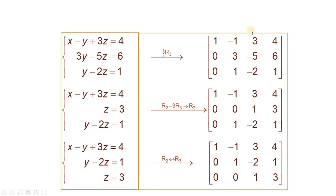For each row of this matrix, there is a corresponding equation. From the third row, z is equal to 3.